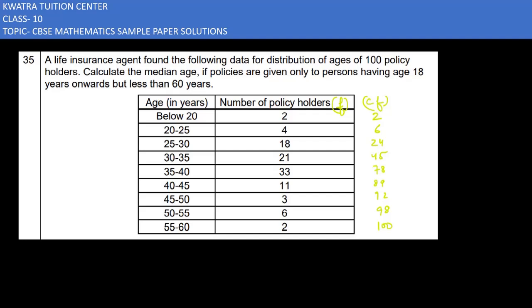So this is right now because here we have 100 policyholders mentioned already. So CF we have done. What do we need to find out? We have to find the median age. And what is median? What is our formula?